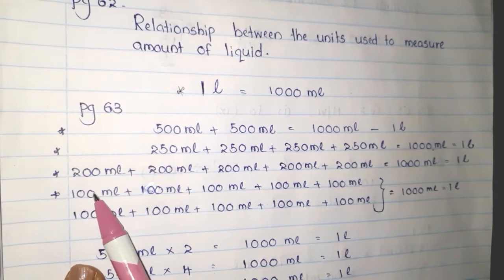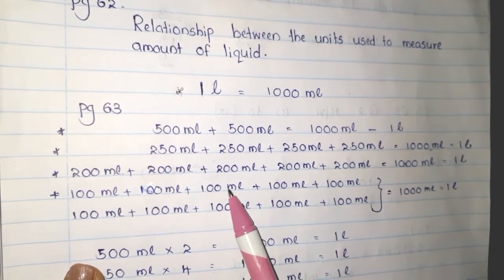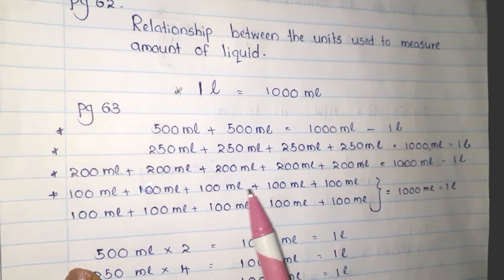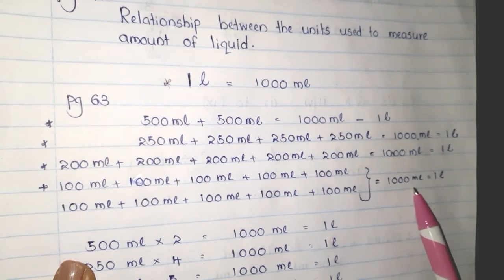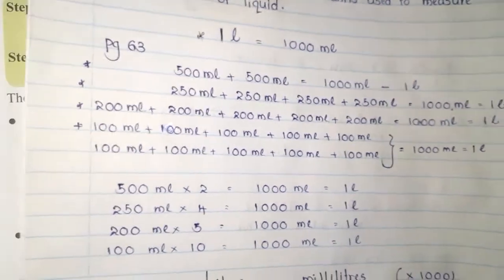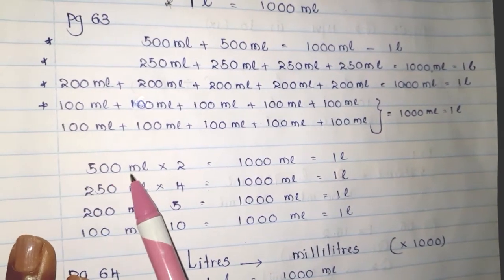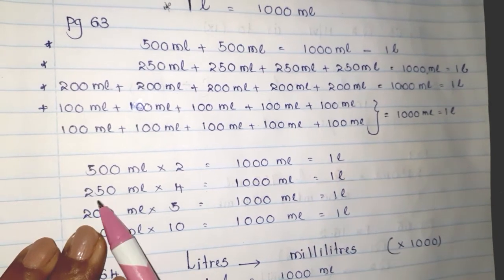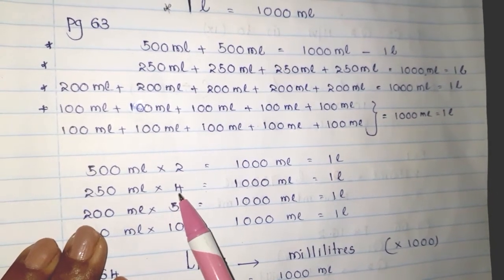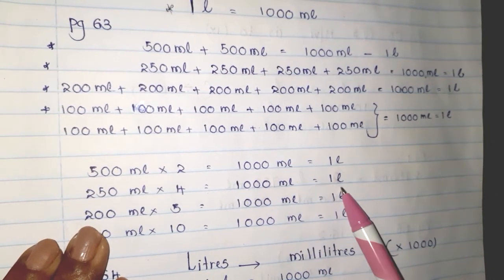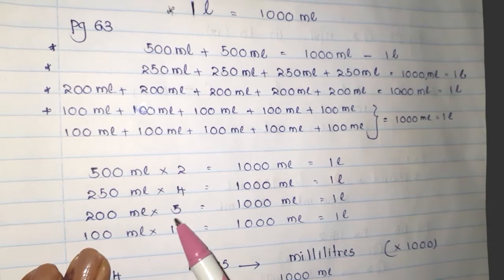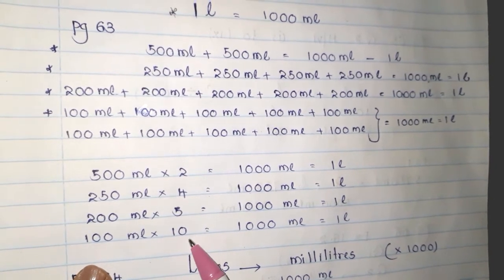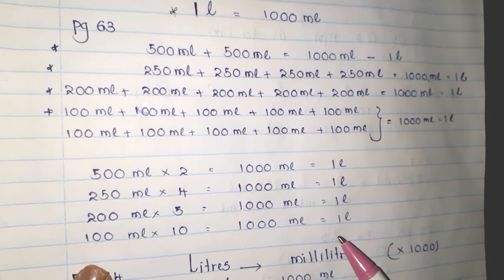I have taken 100 milliliters 10 times. When I add 100 milliliters 10 times, it is equal to 1000 milliliters — that means 1 liter. To summarize: 500 milliliters multiplied by 2 equals 1000 milliliters equals 1 liter; 250 milliliters multiplied by 4 equals 1000 milliliters equals 1 liter; 200 milliliters multiplied by 5 equals 1000 milliliters equals 1 liter; 100 milliliters multiplied by 10 equals 1000 milliliters equals 1 liter. Please remember this.